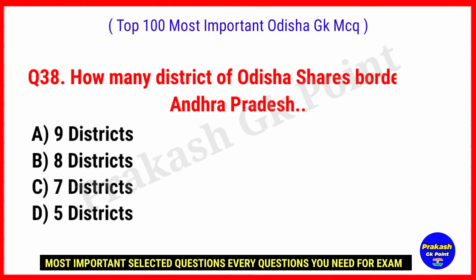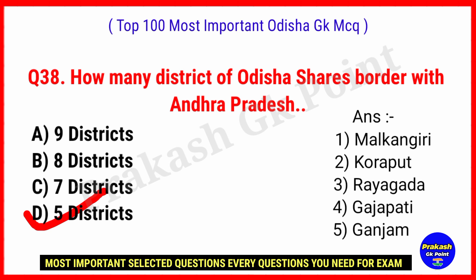How many districts of Odisha share a border with Andhra Pradesh? Answer: Option D, 5 districts — Malkangiri, Koraput, Rayagada, Gajapati and Ganjam.